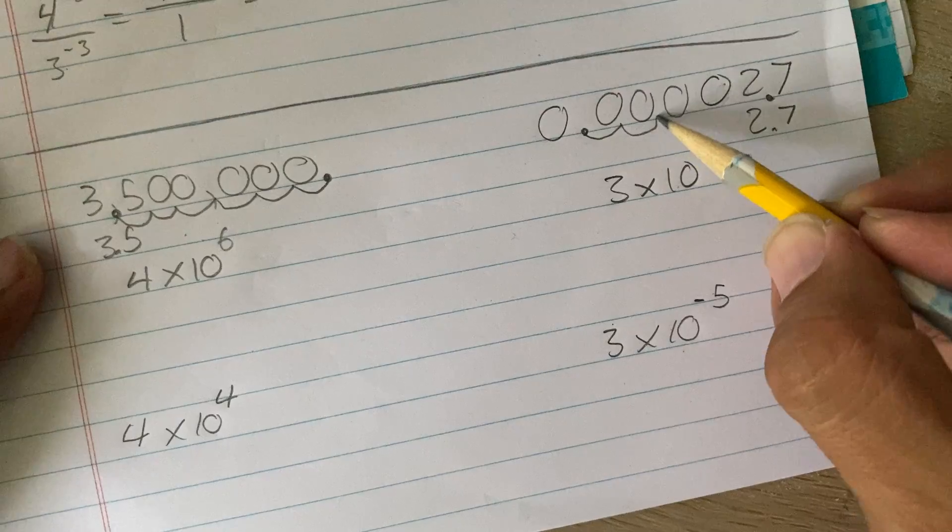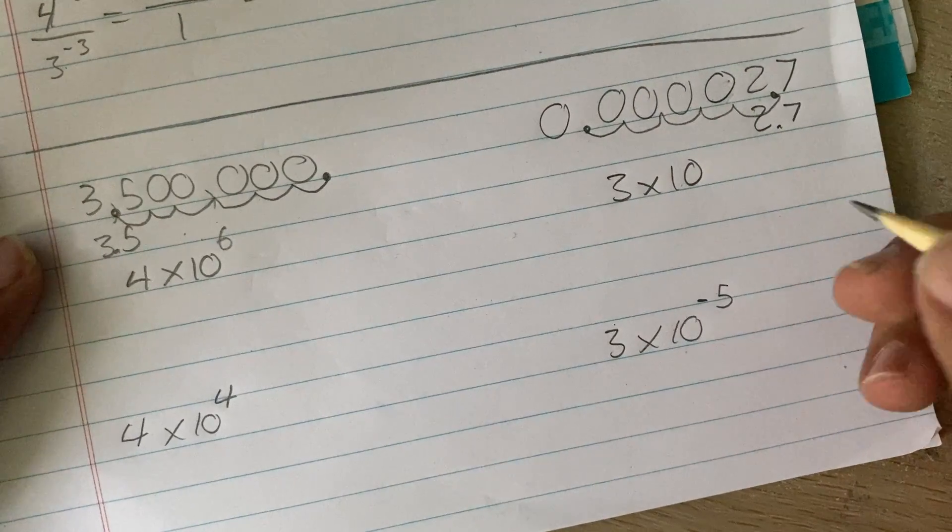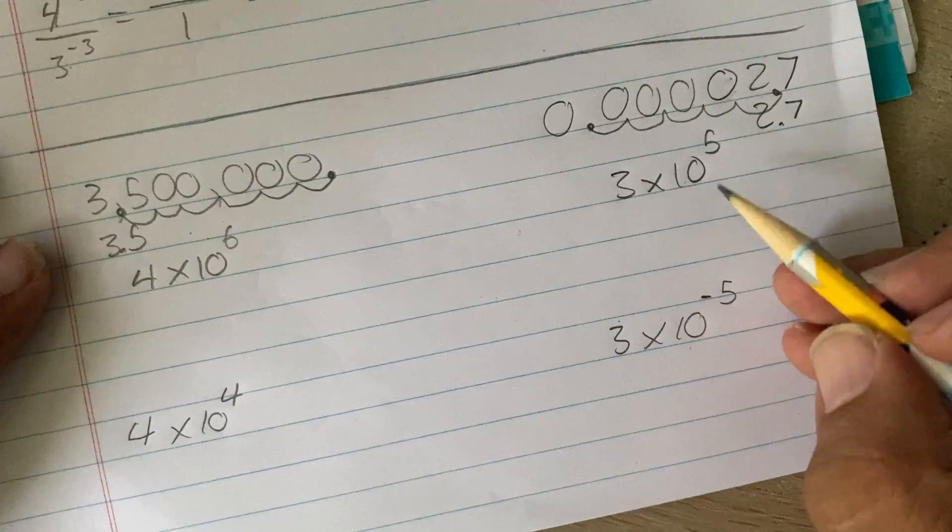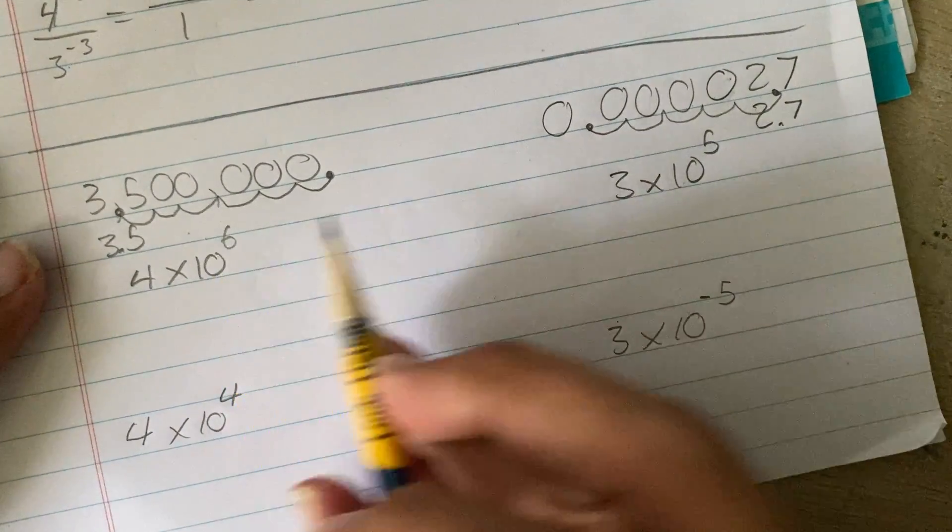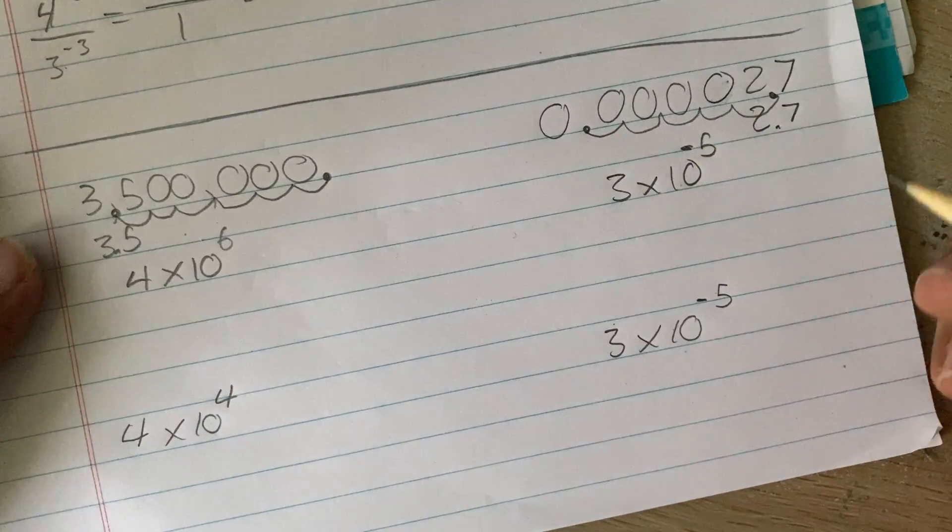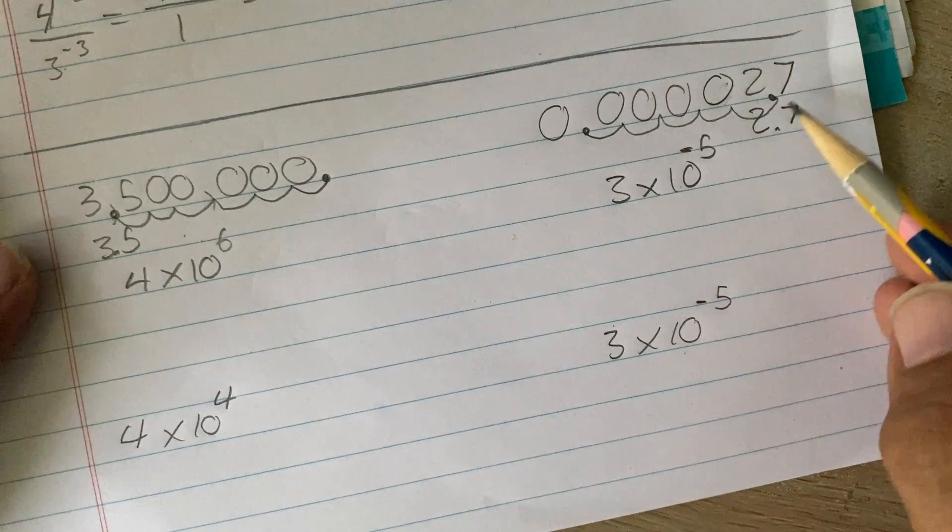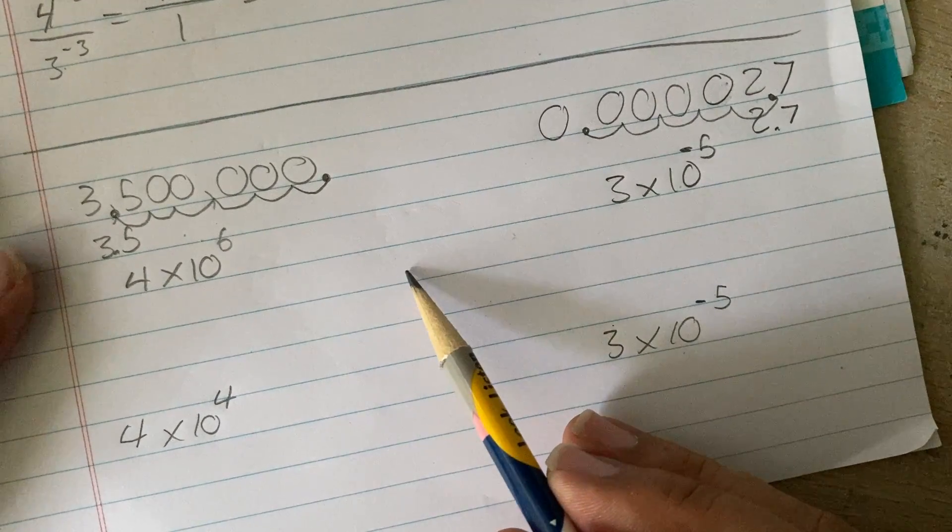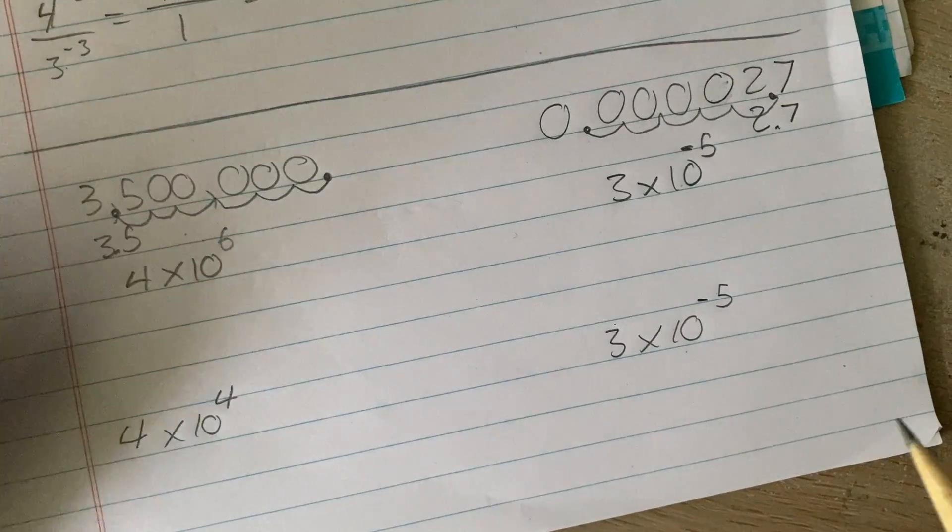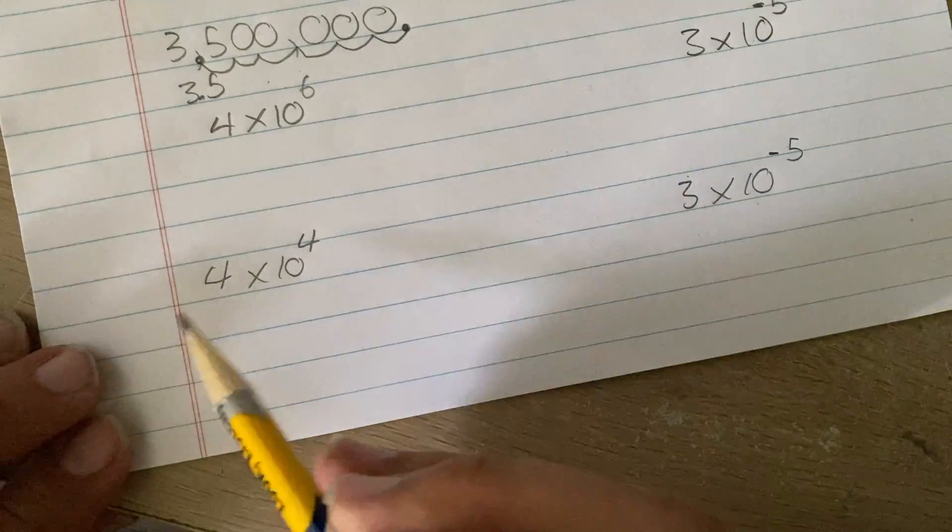How many times did I move this? 1, 2, 3, 4, 5. So, it actually is going to be 5. But I can't make these look exactly the same, so I'm going to put a negative sign telling me that I have to make this number smaller. So, I have to make this number smaller by 5 times for it to equal what it used to equal.